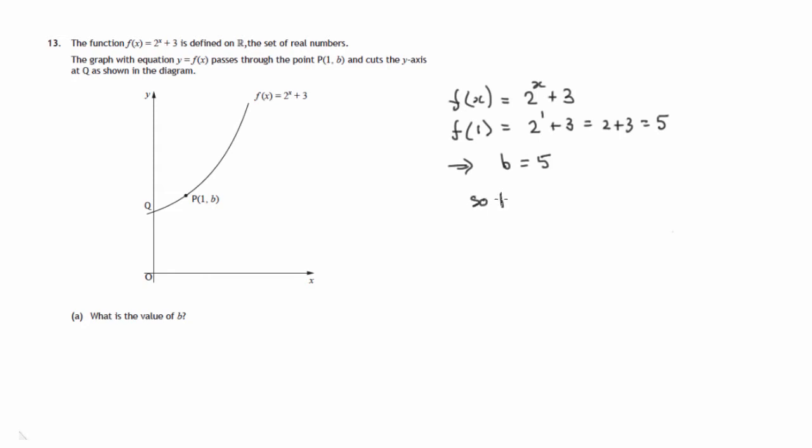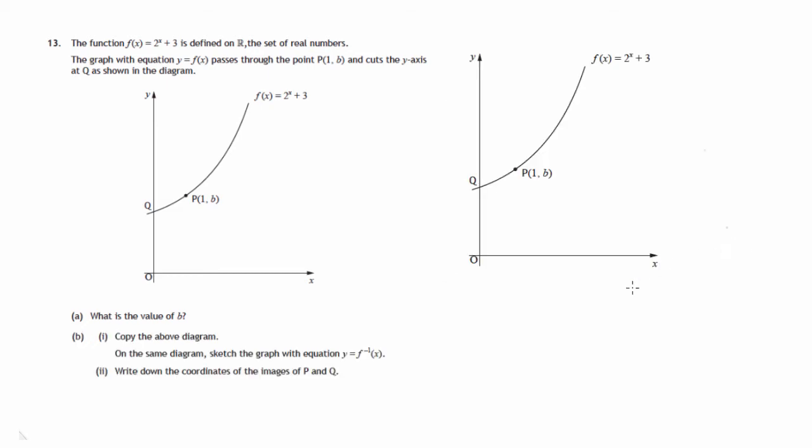So we know now that p is the point (1, 5). Moving on now to part b, we're told that on a copy of this diagram, here I've got another copy of it, we're to sketch the graph with equation y equals f to the minus 1 of x.